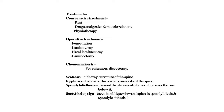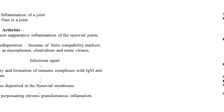Other vertebral column problems include scoliosis (sideways curvature of the spine), kyphosis (excessive backward convexity of the spine), spondylolisthesis (forward displacement of a vertebra over the one below), and spondylolysis. In spondylolisthesis, a 'Scotty dog' sign is seen on the oblique view of the spine.